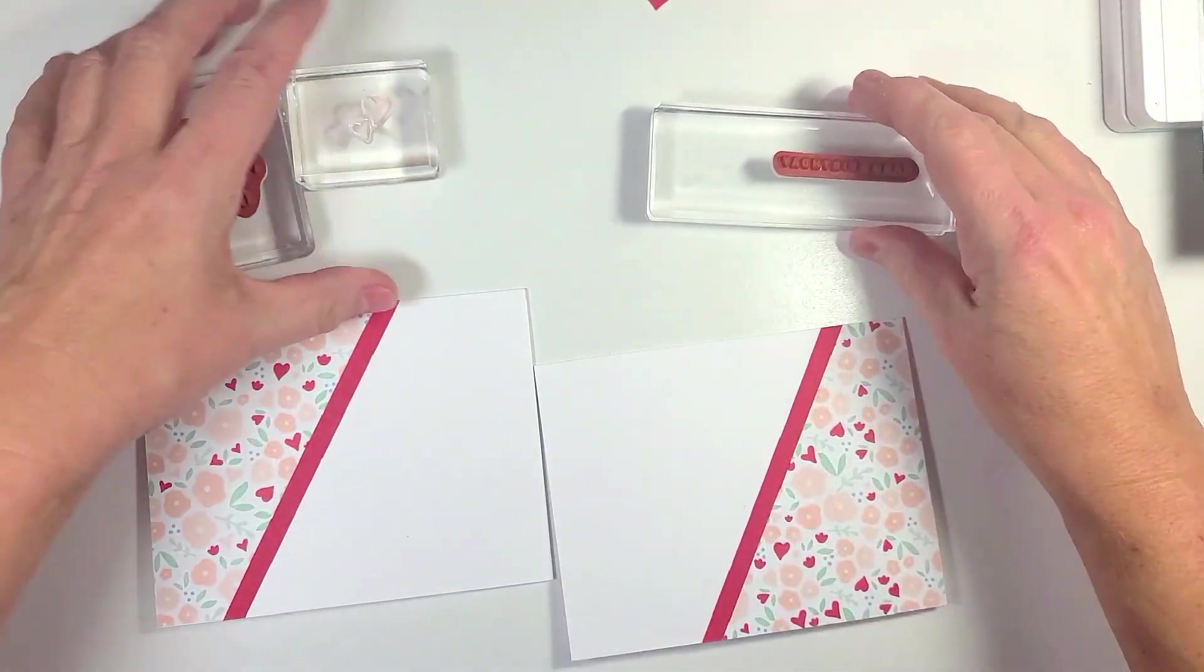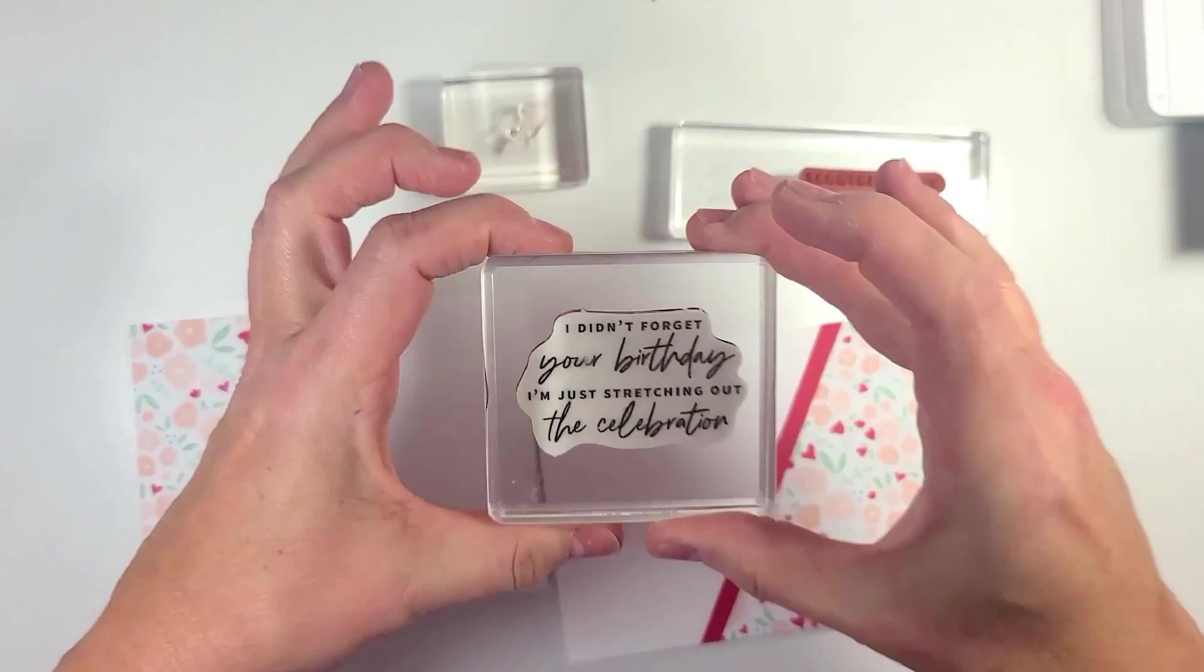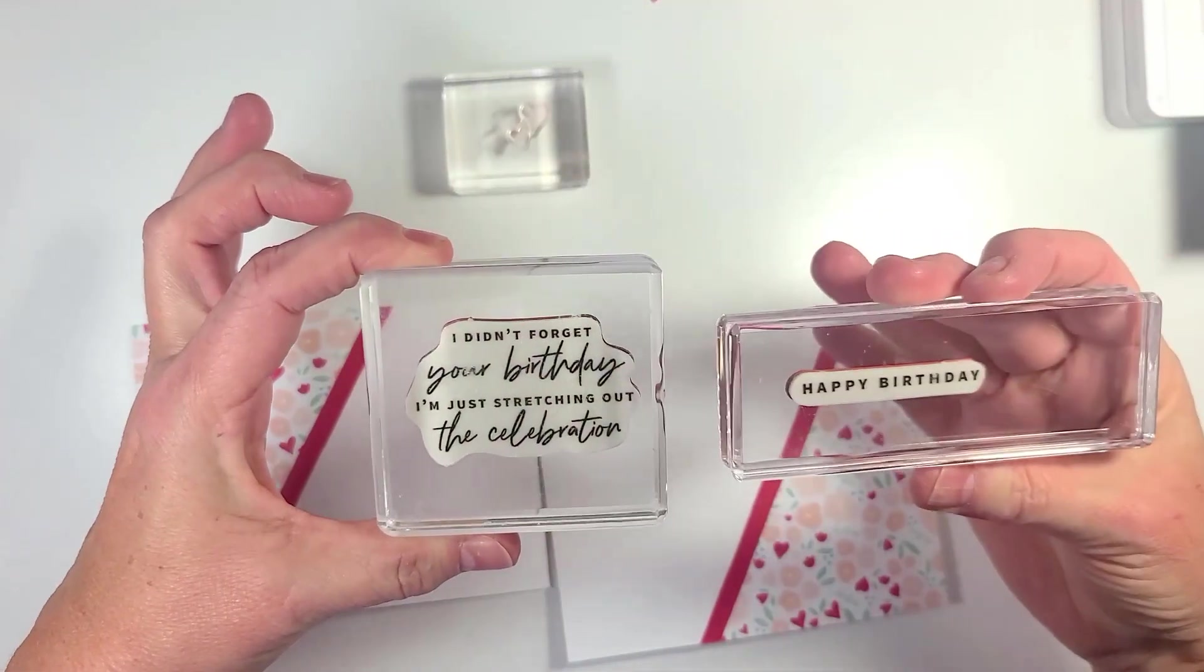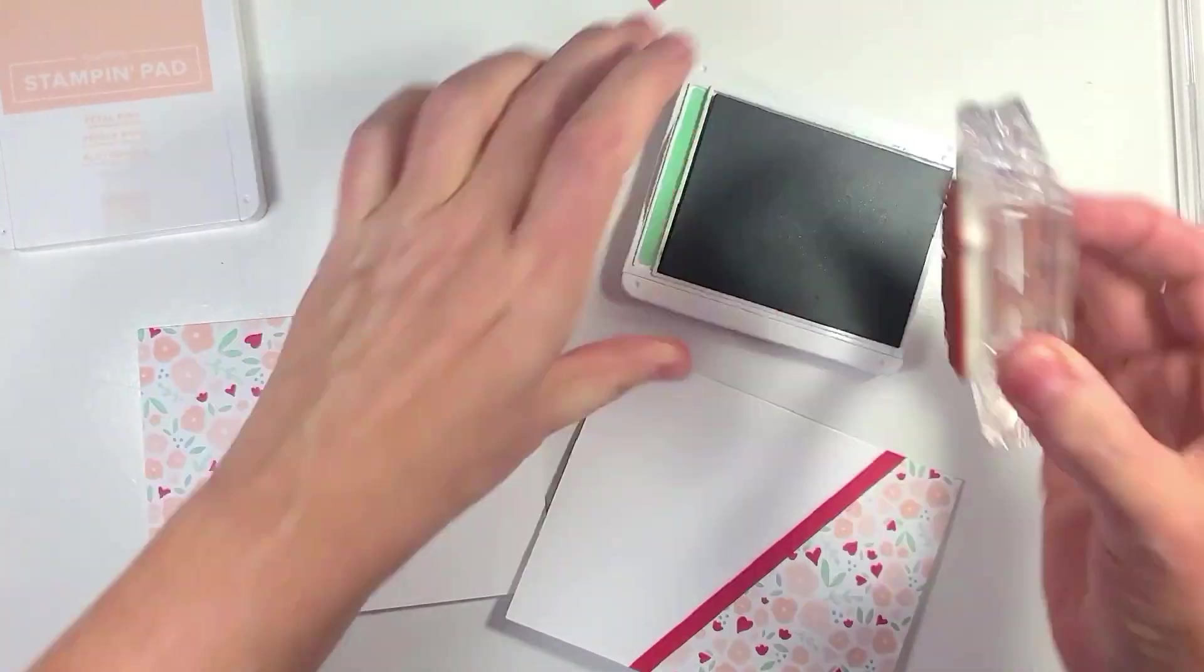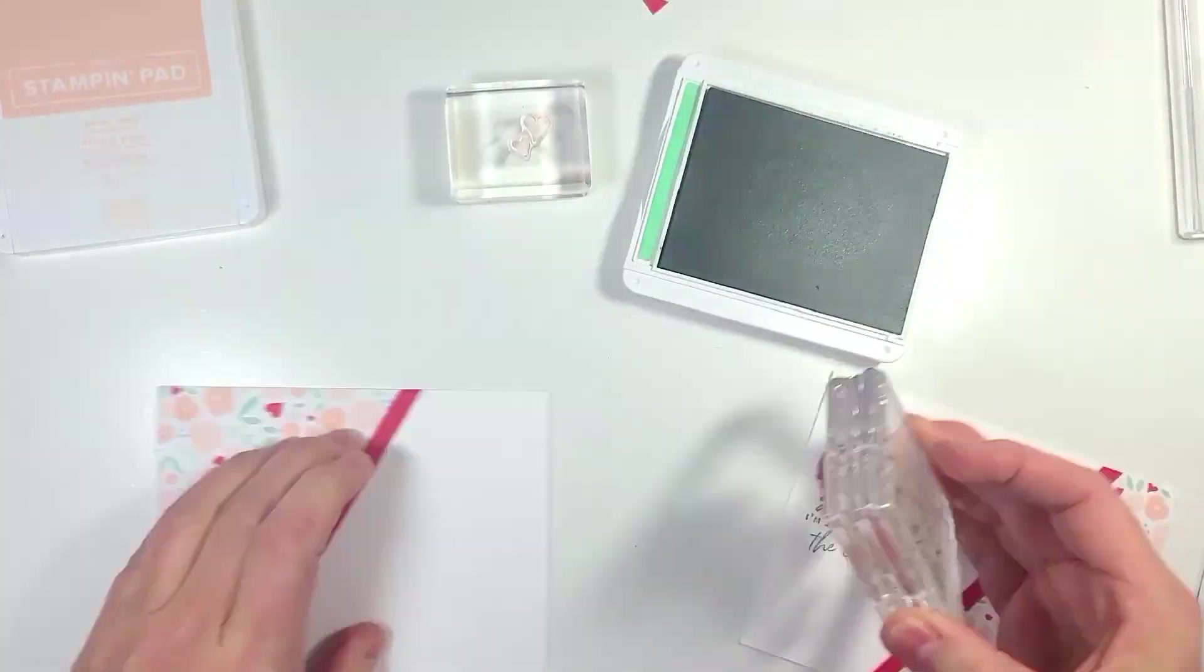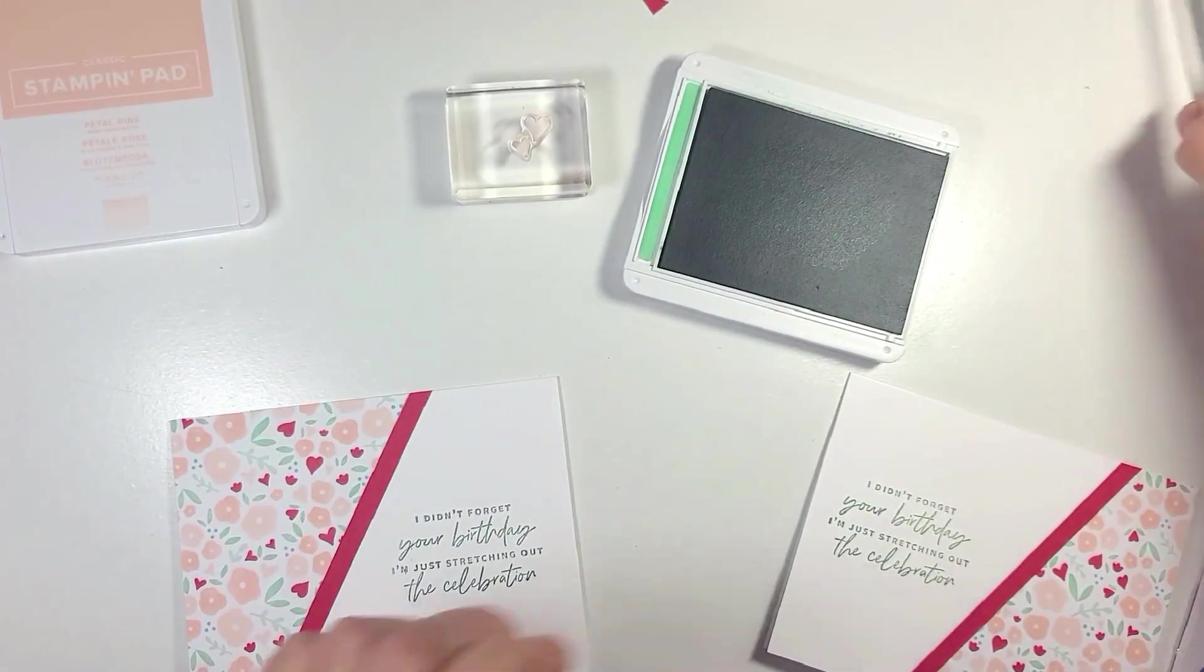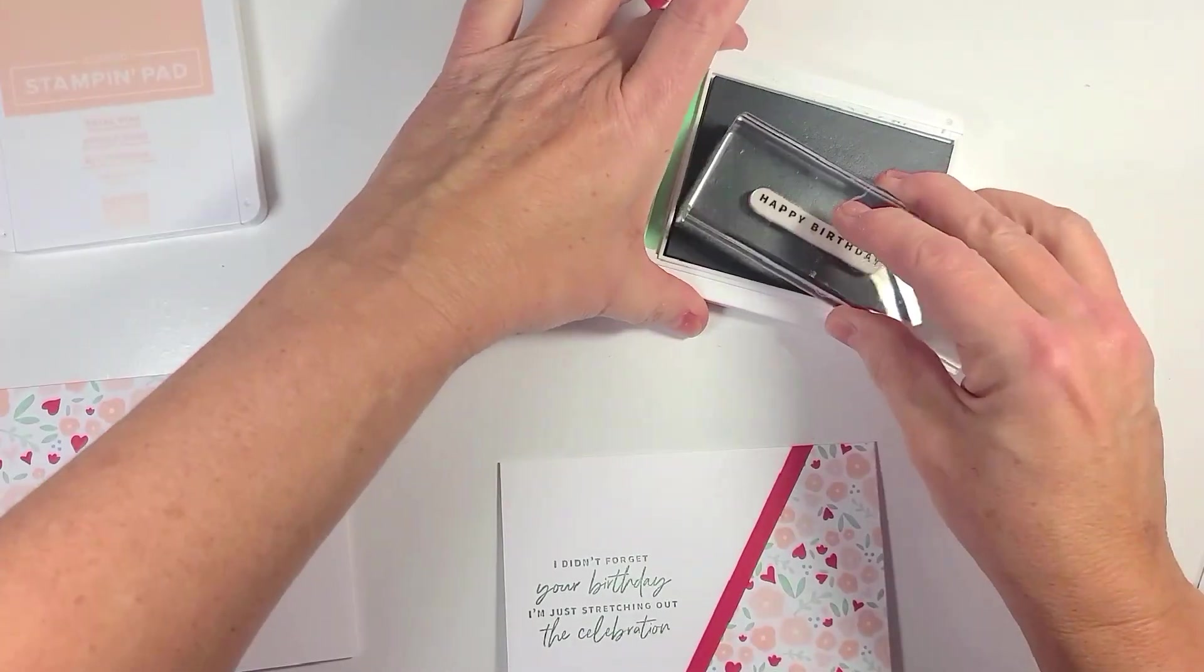Next we're going to bring in our stamps. We're going to use our two sentiments. We're going to use mint macaron and then for the inside we're going to go happy birthday.